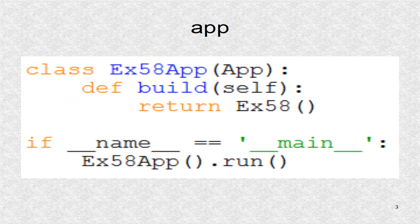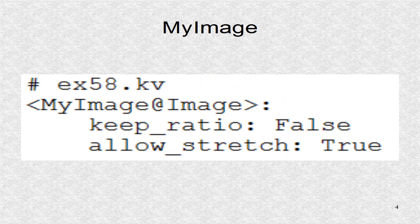We have to have a subclass of the app class. In the KV file, the MyImageDynamic class is created and it allows for a stretchable image.